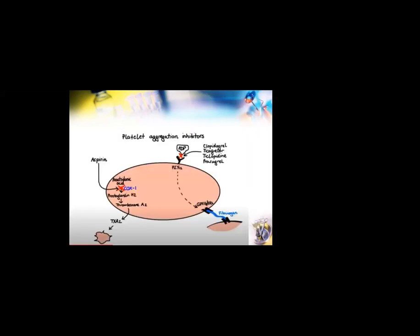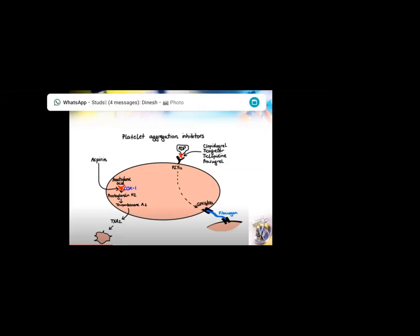Coming to the antiplatelets, we have different antiplatelet drugs such as aspirin, clopidogrel, ticlopidine, and dipyridamole. Most commonly we come across aspirin and clopidogrel. Going back to the step of hemostasis where platelets attach to exposed collagen and release factors aiding in aggregation — one such factor is thromboxane A2. Aspirin acts on cyclooxygenase-1, which converts arachidonic acid into prostaglandin H2, which is further metabolized to thromboxane A2. Thromboxane A2 helps in aggregation, bringing platelets to the site. By blocking cyclooxygenase, we prevent the formation of thromboxane A2 and thereby prevent platelet aggregation.